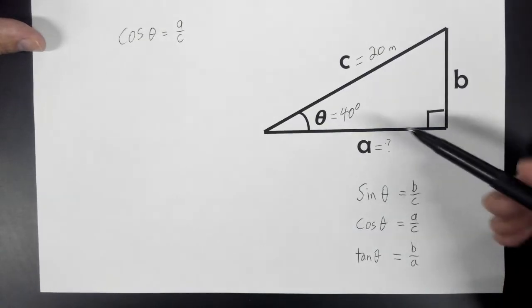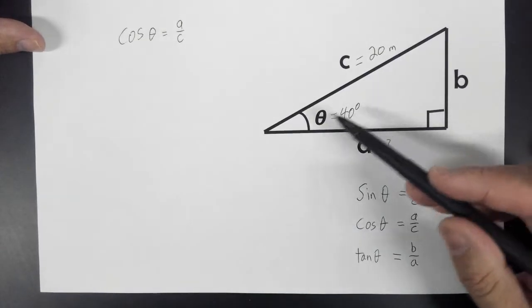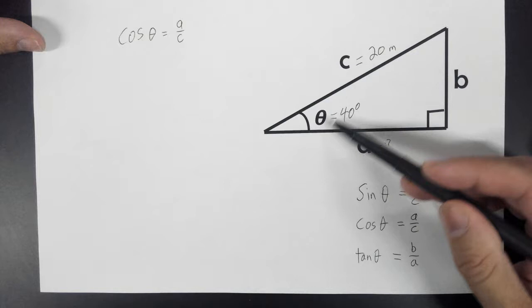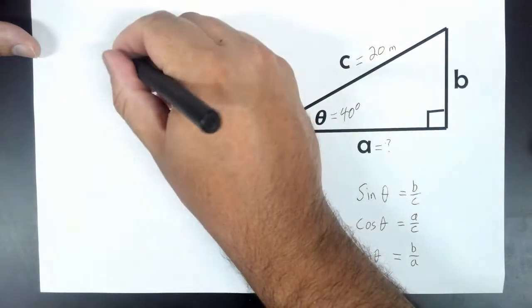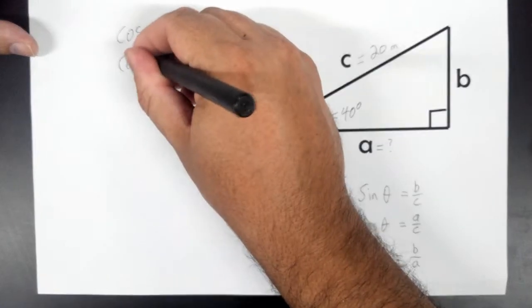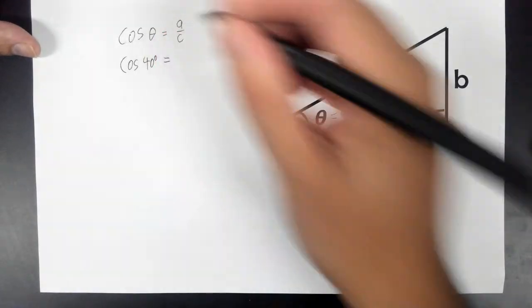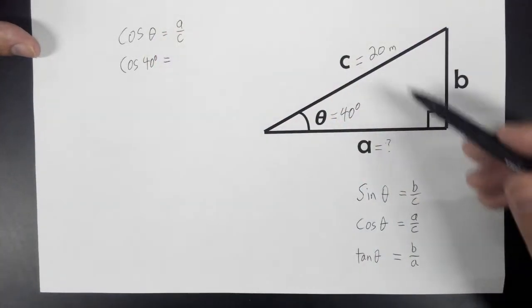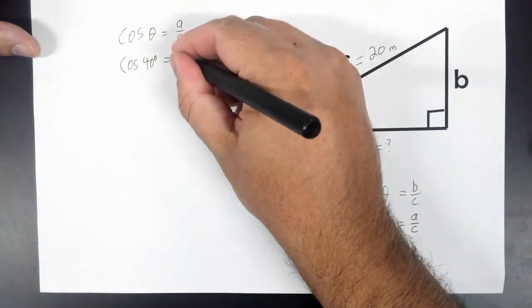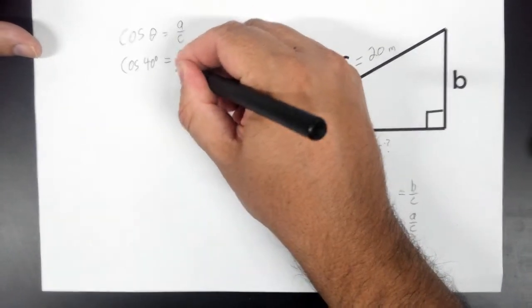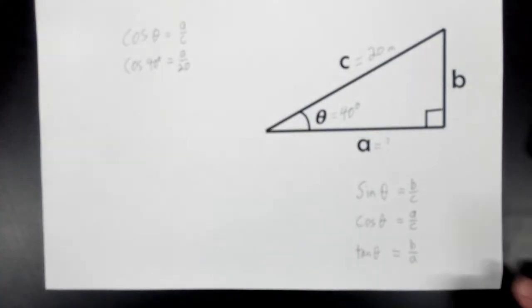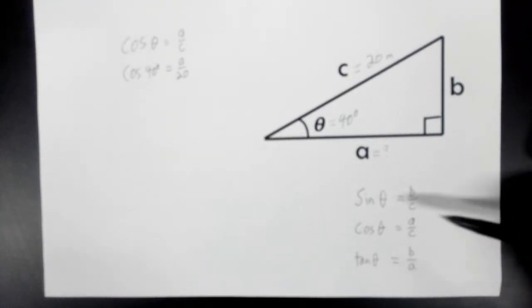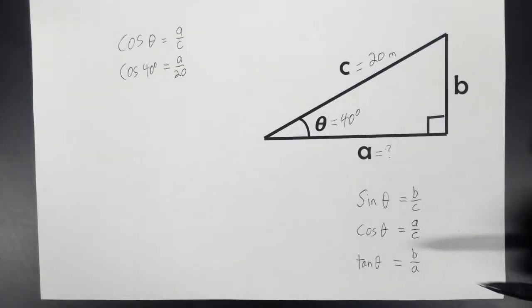You'll notice that we know what the angle is. Theta is just a Greek letter that stands for an unknown angle, but now I put a number there, so it's known. We'll put cosine 40 degrees equals, and then we don't know what A is, but we know what C is, which is 20. So this is the equation that we got from using sine, cosine, and tangent.